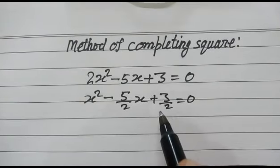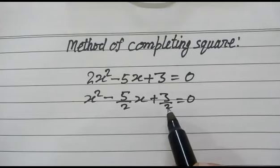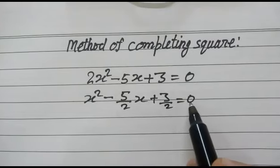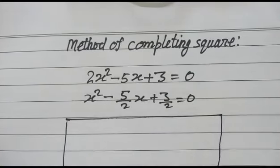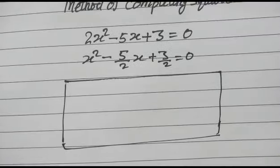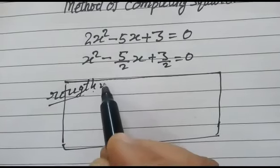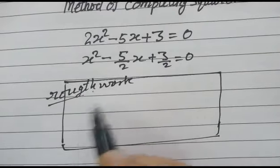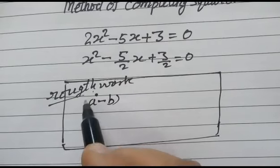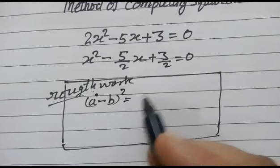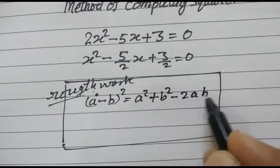This equation is still not a complete square. We have to take some more steps to complete it in square form. In our rough work, as we know, (a minus b) whole square is equal to a² plus b² minus 2ab.